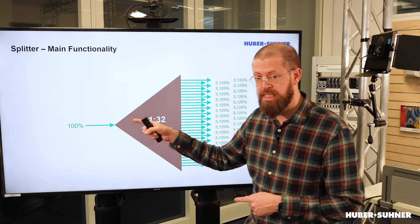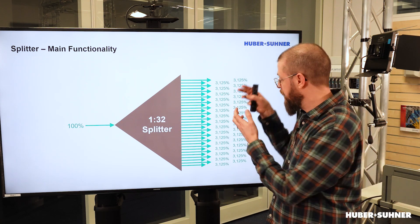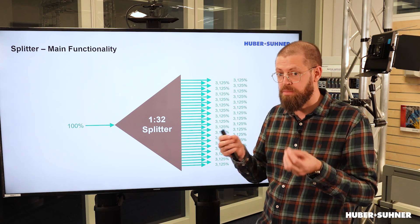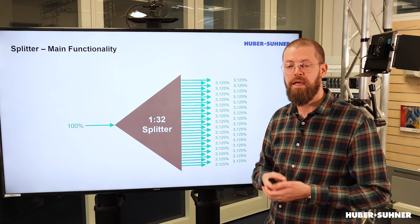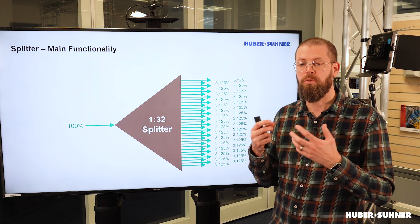But the important thing is that the signal from a content point of view, from a data rate and everything, they're completely identical on the outputs. They're all exactly the same signals. The only thing that is being split is the optical power, and that's why they are also very often referred to as optical power splitters.